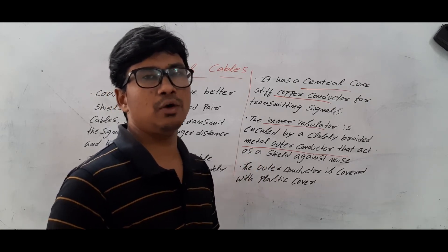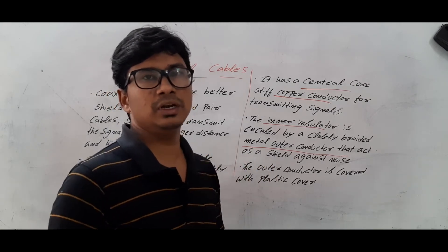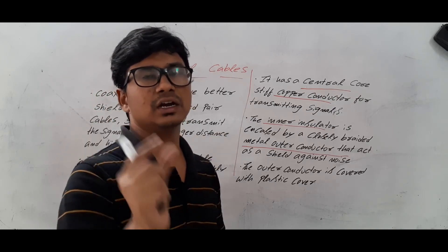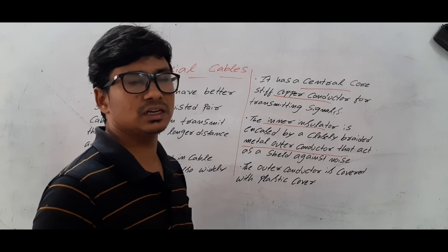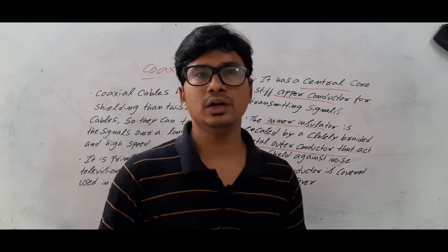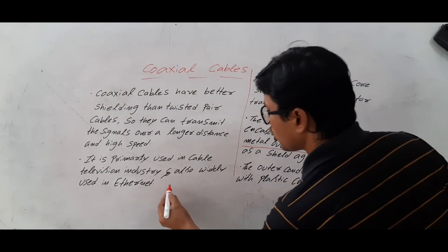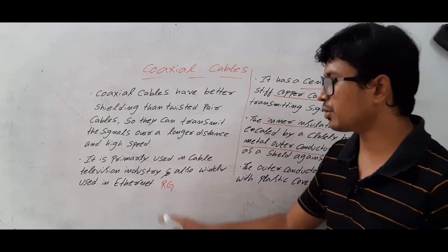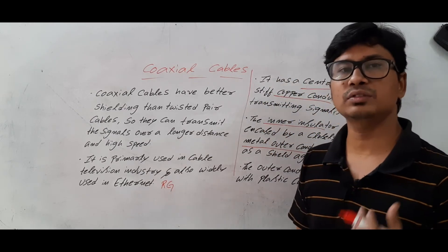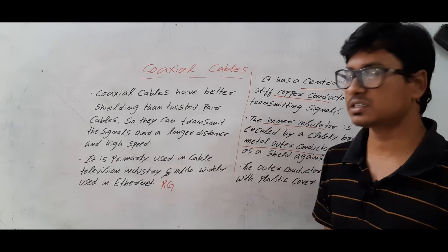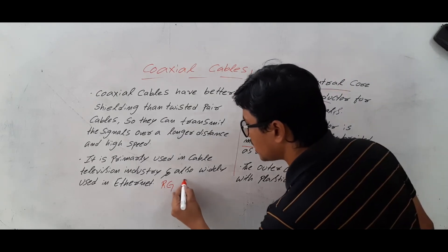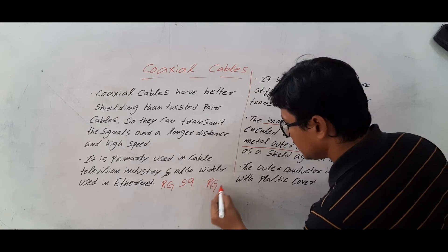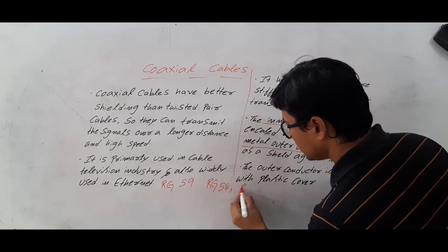I hope you have checked the cable TV connection — there we will have a black cable wire, and that is nothing but your coaxial cable. According to the radio government standard, we call it as RG. The radio government has three standards of coaxial cables: RG-59, RG-58, and RG-11.